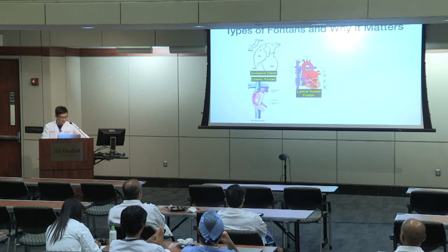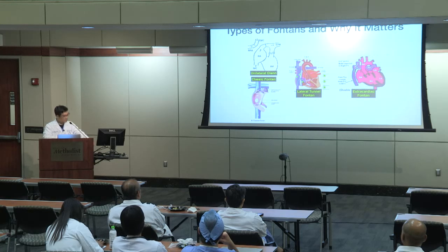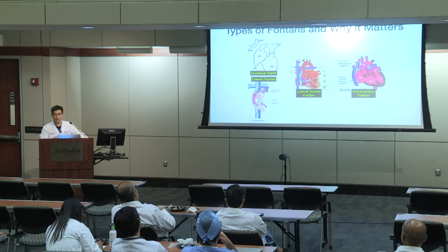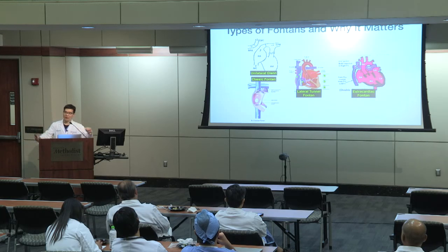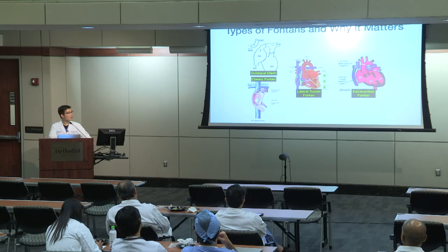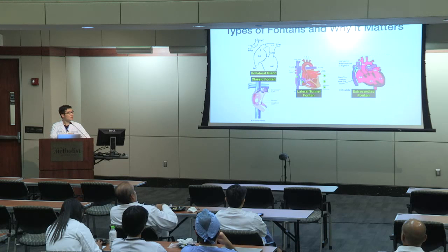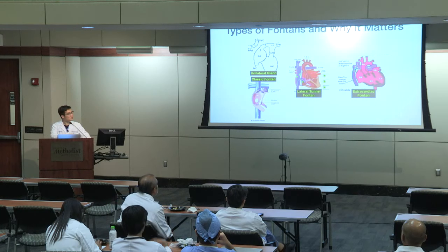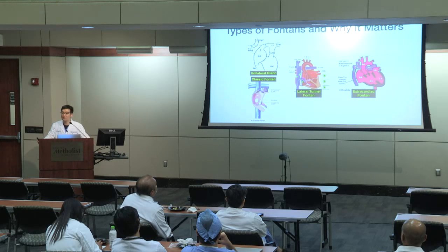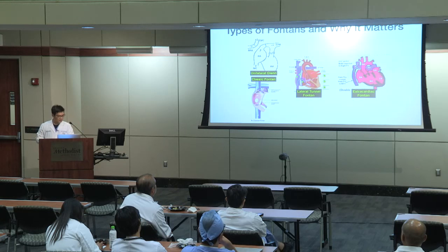The extracardiac conduit creates the opposite problem: when patients develop atrial arrhythmias, there's no connection to the right atrium — there may be daylight between the conduit and the systemic atrium. The only option is to go retrograde, which is obviously not easy, especially with complicated systemic ventricular anatomy.